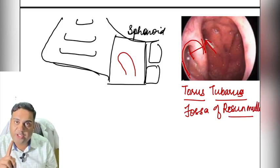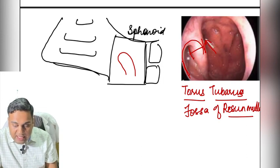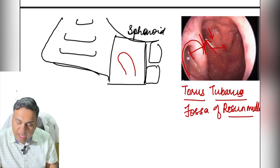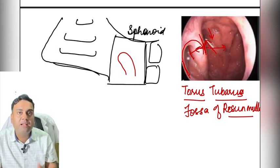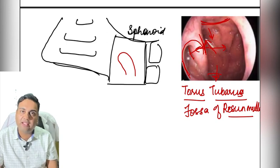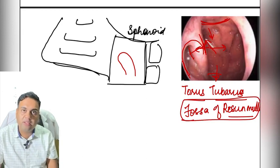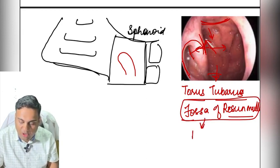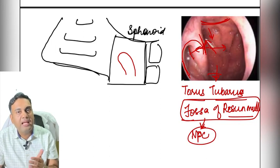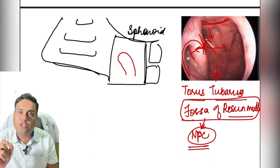The boundaries of the fossa of Rosenmüller are: anteriorly — torus tubarius; posteriorly — posterior pharyngeal wall; medially — nasopharyngeal cavity; laterally — parapharyngeal space; superiorly — skull base; inferiorly — oropharynx. The clinical significance of the fossa of Rosenmüller is that it is the most common site of nasopharyngeal carcinoma (NPC).